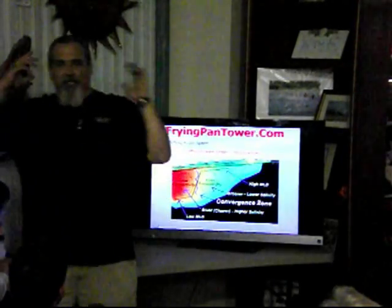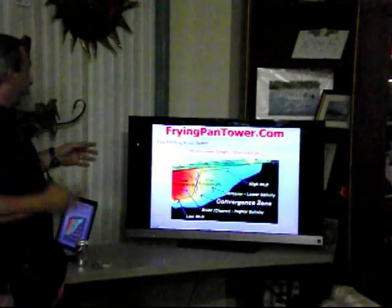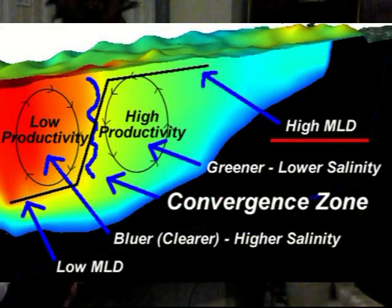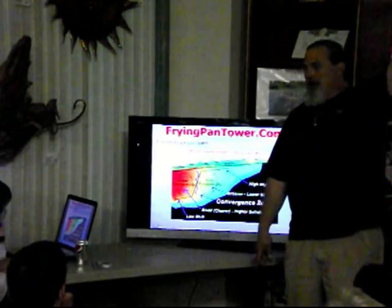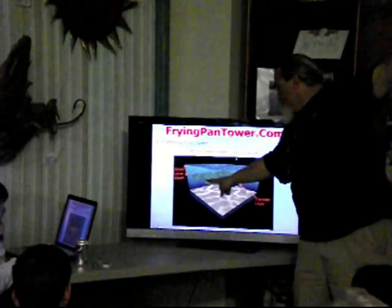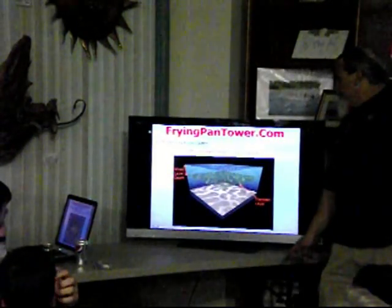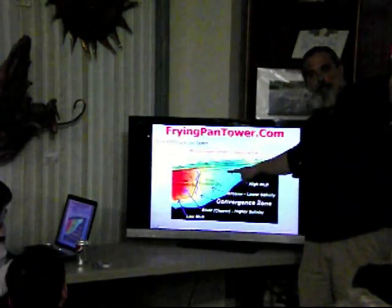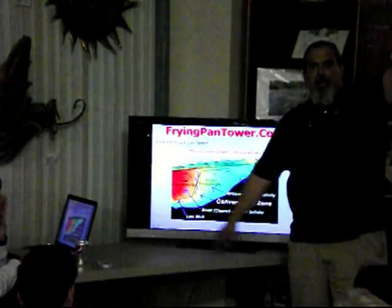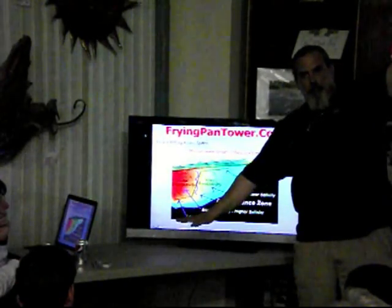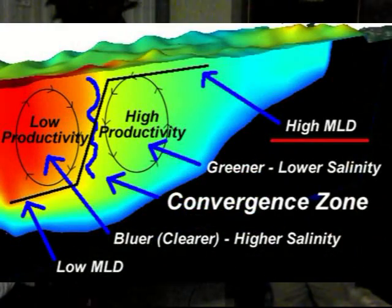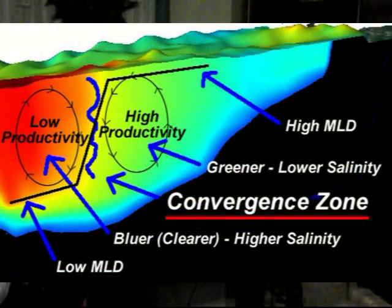So now we go back to our high productivity and low productivity. Right here is our high mixed layer depth value — it's up here. If we can find where mixed layer depth goes from high to low, the difference between those two is the convergent zone. Here's high, here's low, and between the two is the convergent zone. Does that make sense?